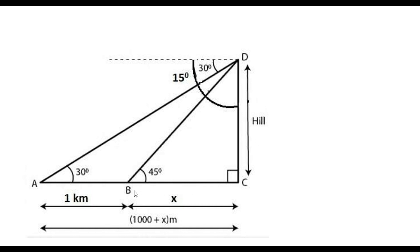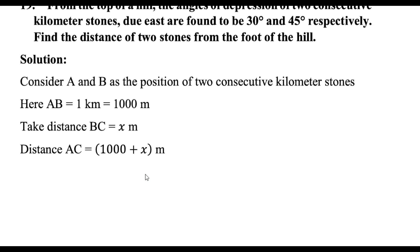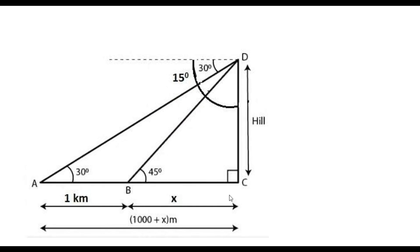Please take BC is equal to x. So the next, this part should be x plus 1000, because the question paper said that the kilometer stones, the distance is 1 kilometer. All the kilometer stones are there, so 1 kilometer is equal to 1000 meters. So that distance AC should be, if it is x and if AB is 1 kilometer, so the entire distance AC should be 1000 plus x meters.